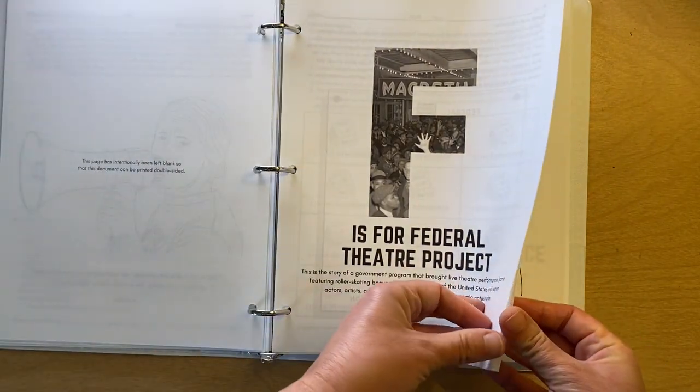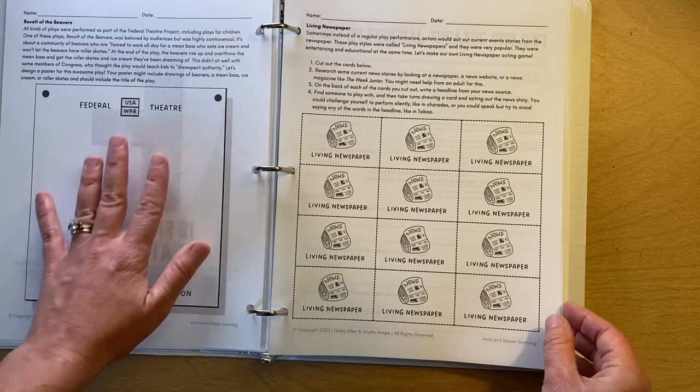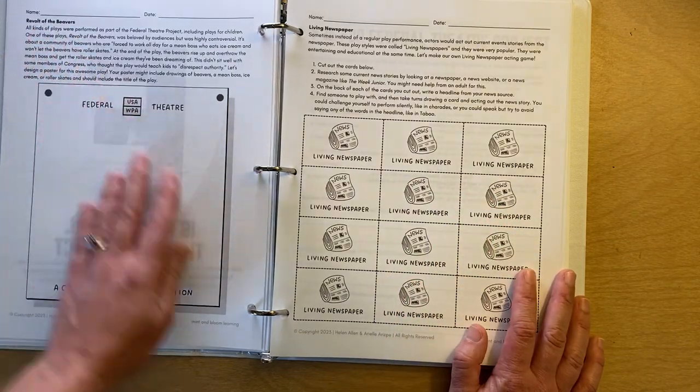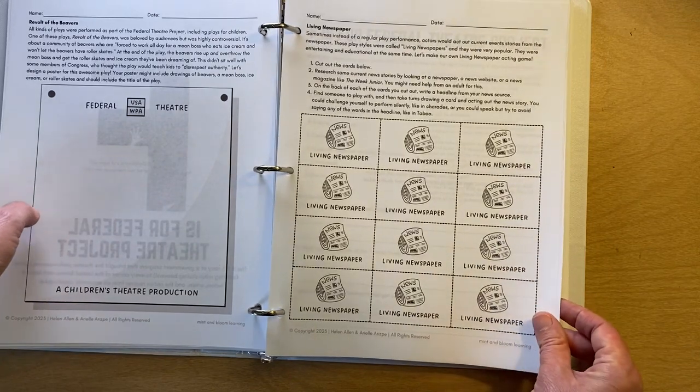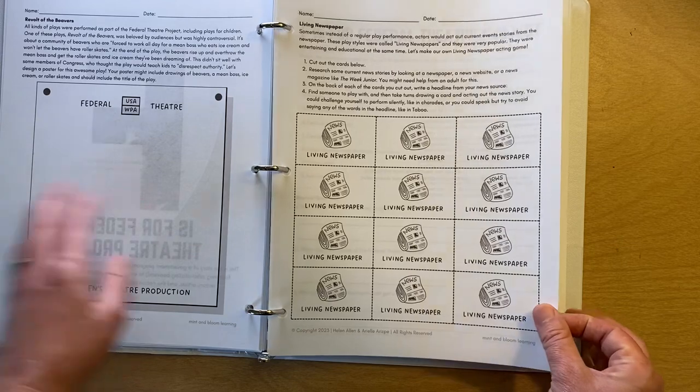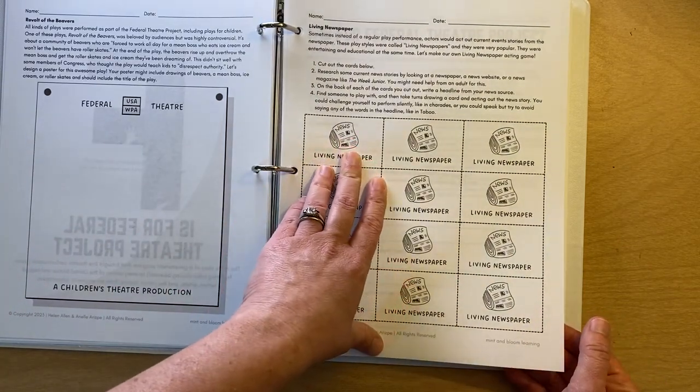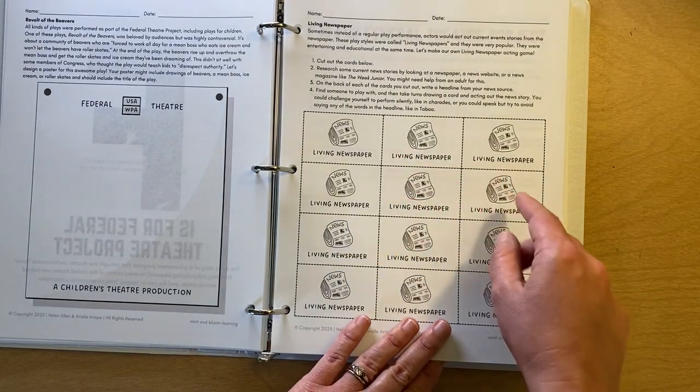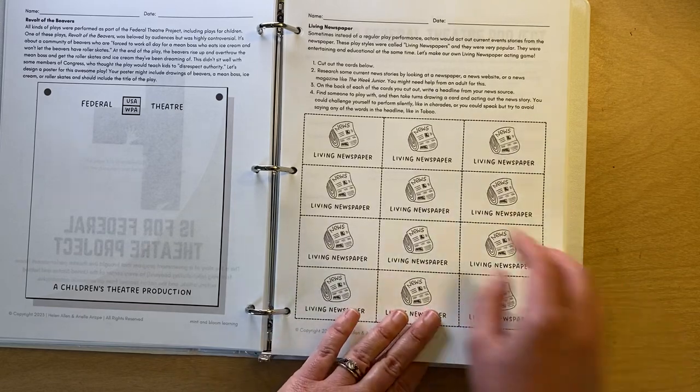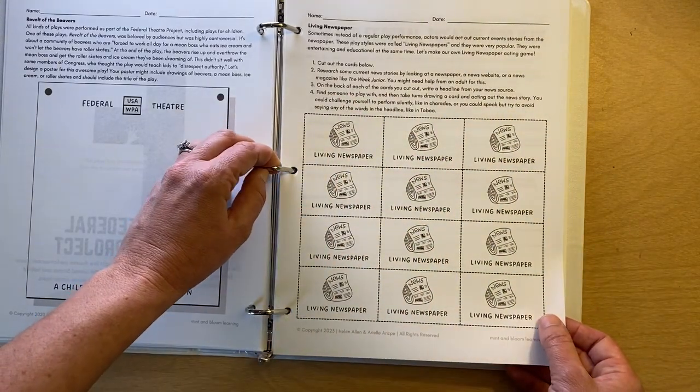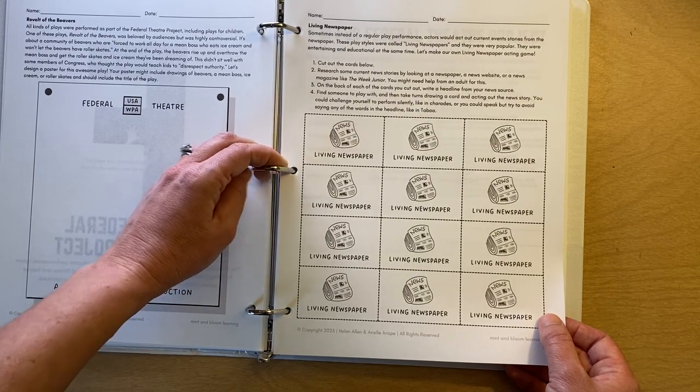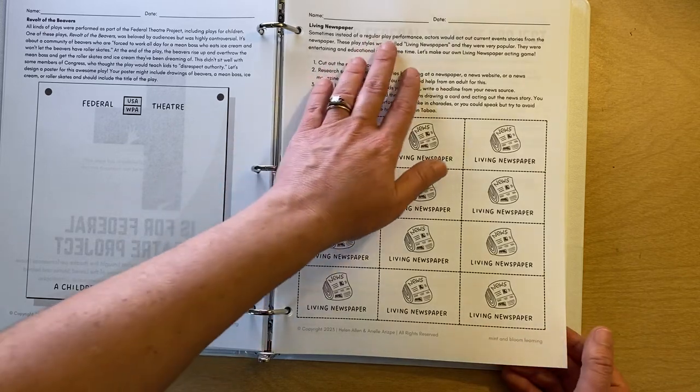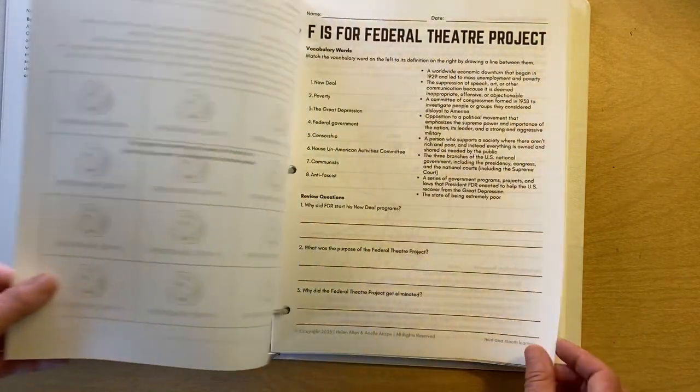We have kids make a poster based on the Federal Theater Project's performance, production of Revolts of the Beavers, which is an exceptionally incredible play that was called out for, by the House Un-American Activities Committee. We have kids make a living newspaper game. This one is one of the ones for kids that don't like to do art as much. It's, it is still creative though. You cut these cards out and you research current news stories. We give you some, you can use the Week Junior if you have that magazine subscription, or you can use an online news source. And kids would write headlines on the backs of these cards and then try to act out the news stories in the same style that some of the Federal Theater Project's plays were done. Okay.